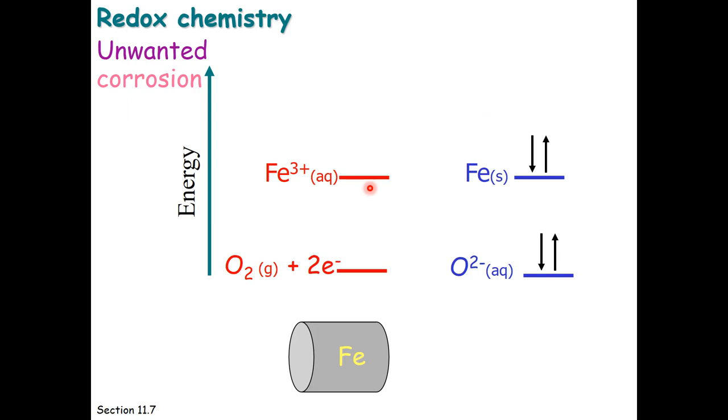Now how do you stop iron from rusting? Well, you can't. It is a spontaneous redox reaction. If you have iron and oxygen available, electrons will always fall downhill. We will make iron 3+ and oxide. So we can't stop it from happening, but we can offer oxygen something better to react with.